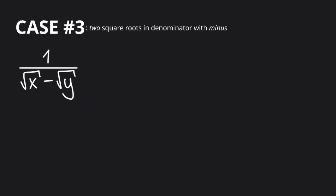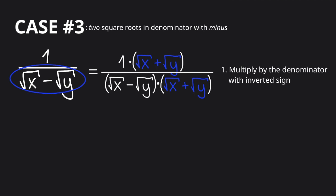In the third case, we have two square roots in the denominator with a minus, or a number and a square root with a minus. And again, like before, we multiply by the denominator, but we use a plus. We invert the sign. And then, we simplify.